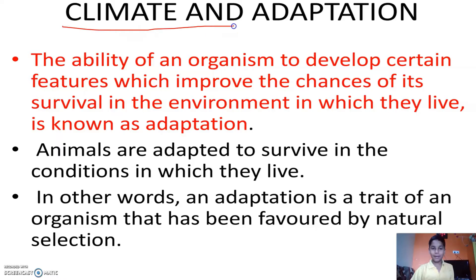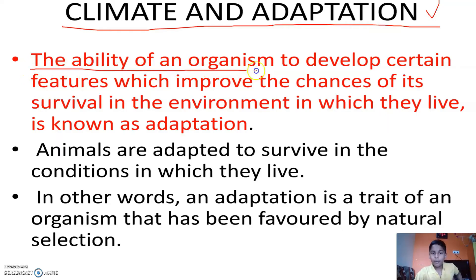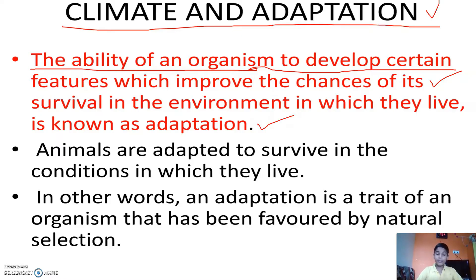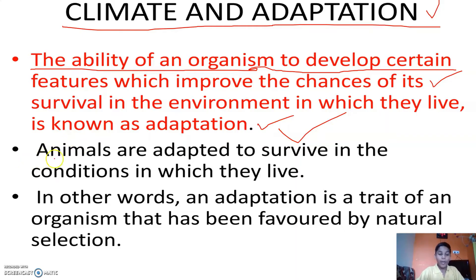Now let's see the definition of climate and adaptation in depth. The ability of an organism to develop certain features which improve the chances of its survival in the environment in which they live is known as adaptation. Animals are adapted to survive in the conditions in which they live.